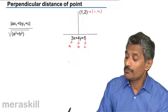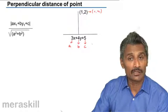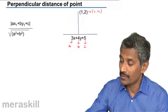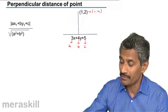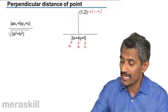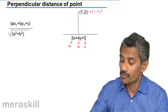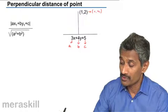I want to find the distance between this point and this particular line. It is given by this formula: a times x1 plus b times y1 plus c, divided by the square root of a squared plus b squared. So in this case, it is going to be 3 times 1 plus 4 times 2 plus 5.